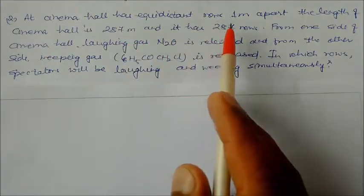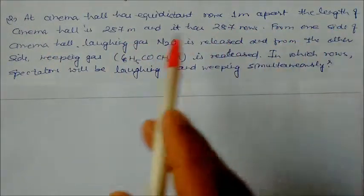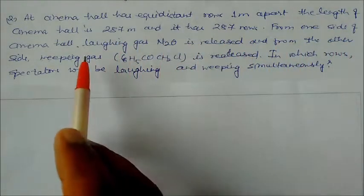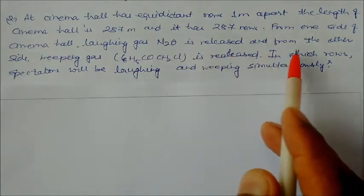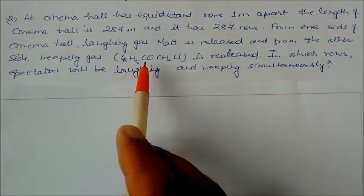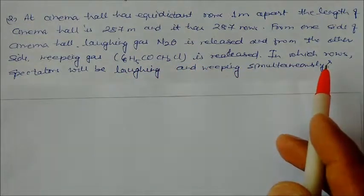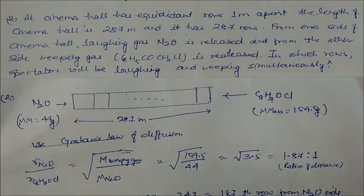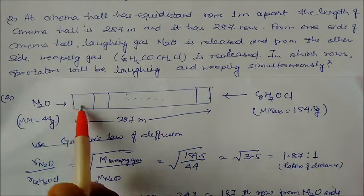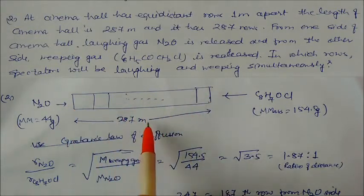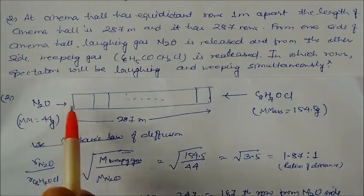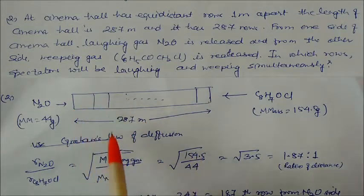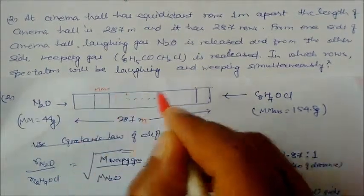A cinema hall has equidistant rows one meter apart. The length of the cinema hall is 287 meters and it has 287 rows. From one side, laughing gas (nitrous oxide, N2O) is released, and from the other side, weeping gas (C6H5COCHCl, molar formula) is released. The total distance is 287 meters and the distance between all rows is one meter.